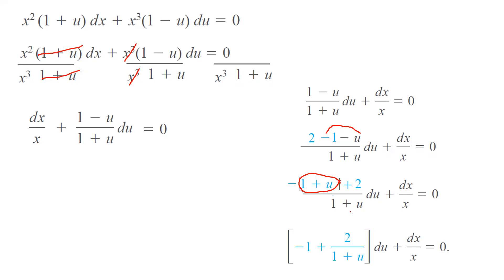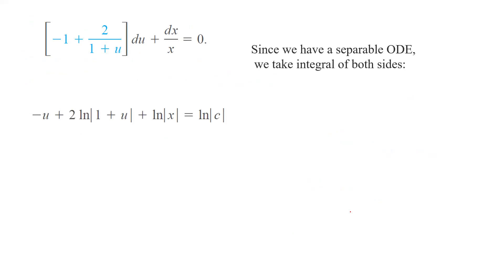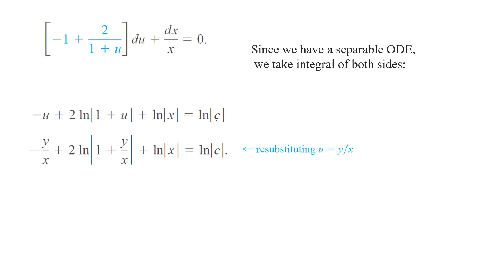So now that you have a separable differential equation, you can start taking the integral of both sides. The integral of negative 1 is negative u. The integral of 2 divided by (1 plus u) is 2 times ln of the absolute value of (1 plus u). Plus the integral of dx over x is ln of the absolute value of x, and on the right hand side the integral of 0 becomes ln of the absolute value of c.